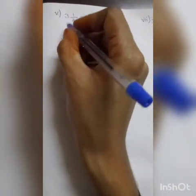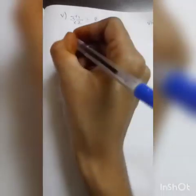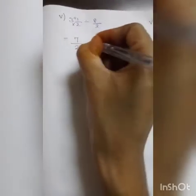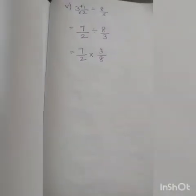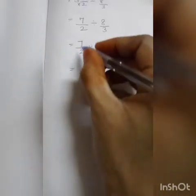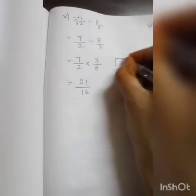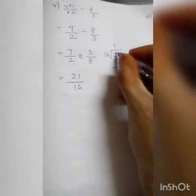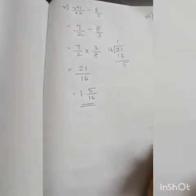Next, fifth question: 3 and 1/2 divided by 8/3. Convert the mixed fraction: 3 twos are 6, 6 plus 1 is 7, so it becomes 7/2. Division 8/3. Division becomes multiplication, 8/3 becomes 3/8. No cancellation. 7 threes are 21, 8 twos are 16. This is an improper fraction. Divide: 1 sixteen is 16, remainder 5. The final answer is 1 and 5/16.